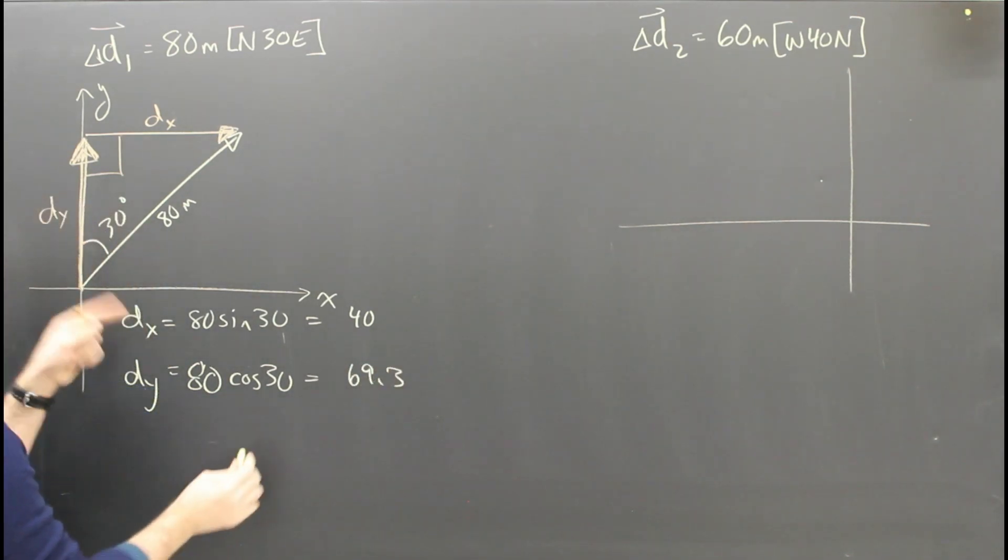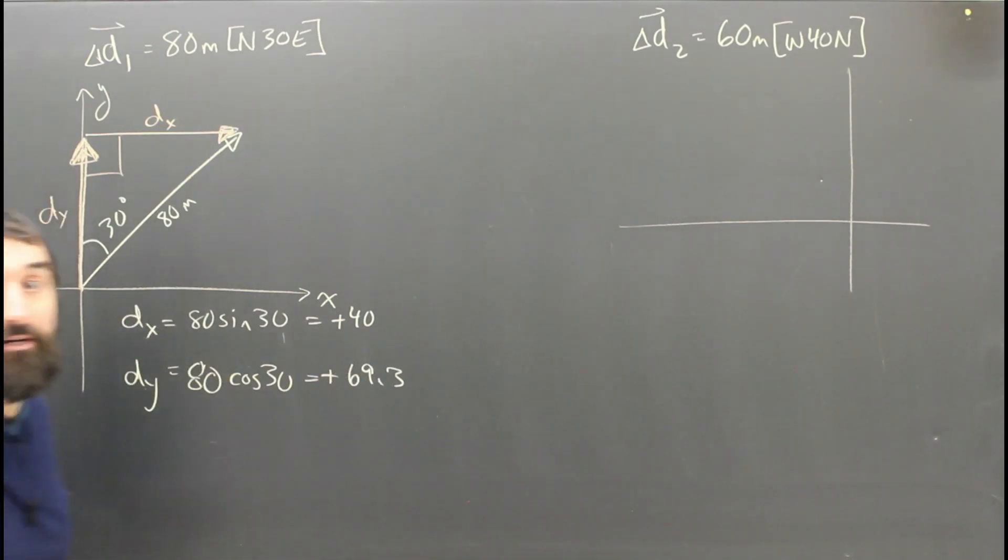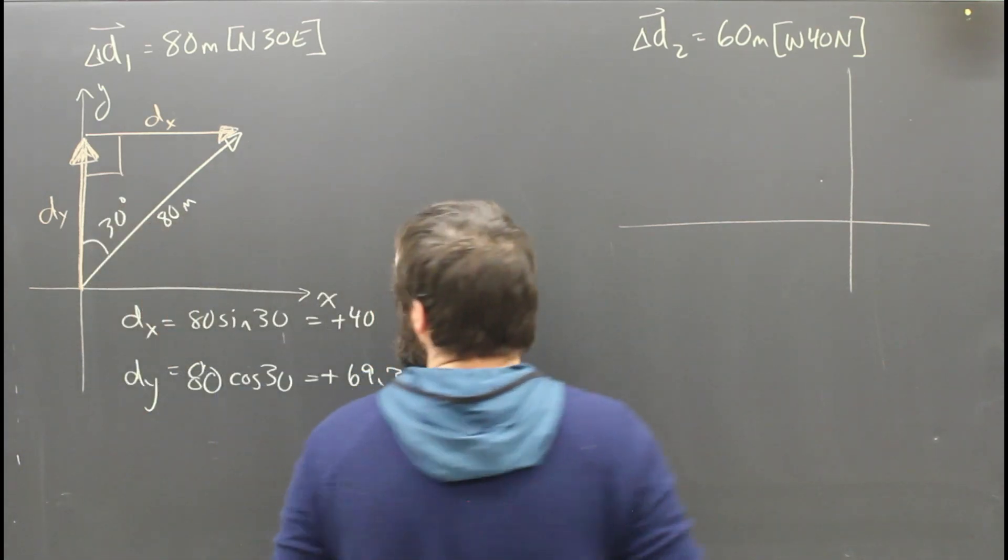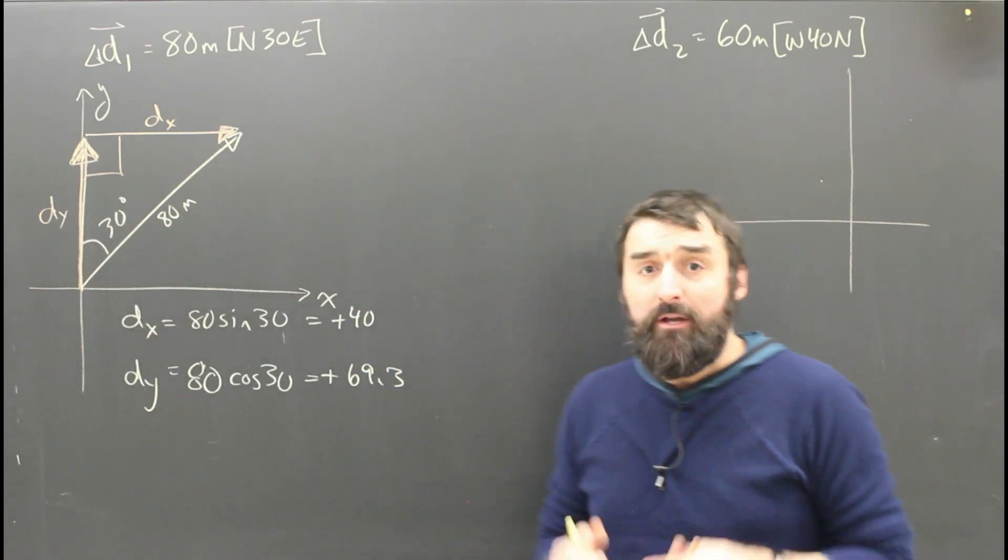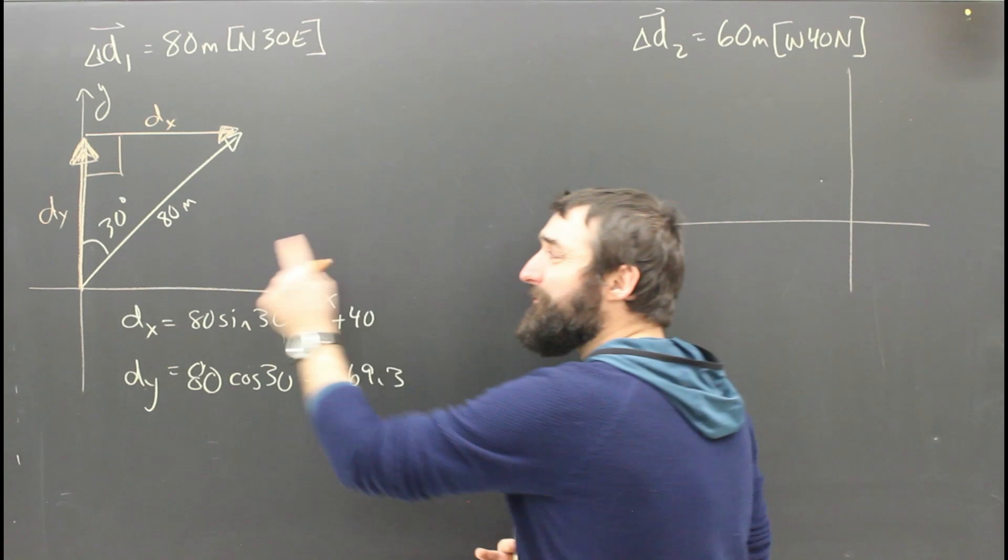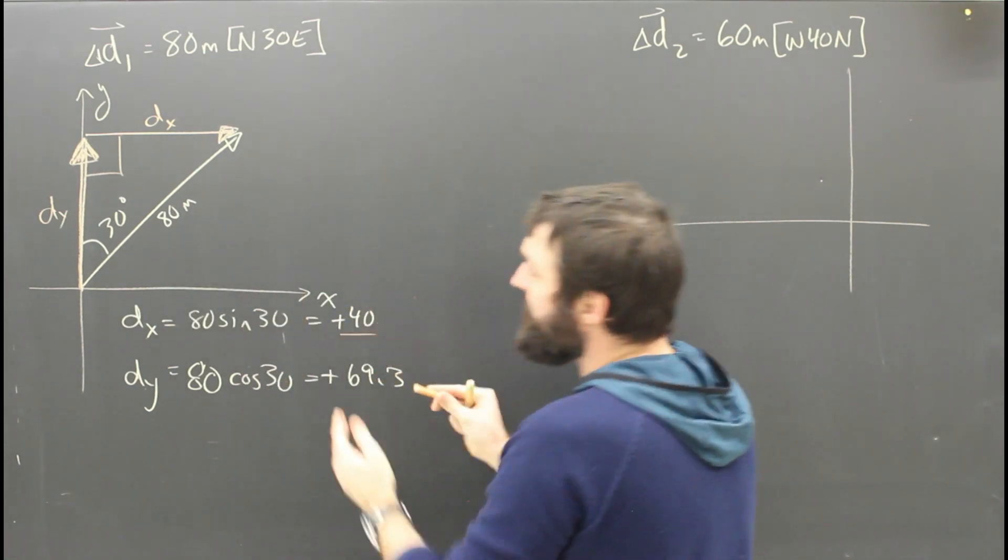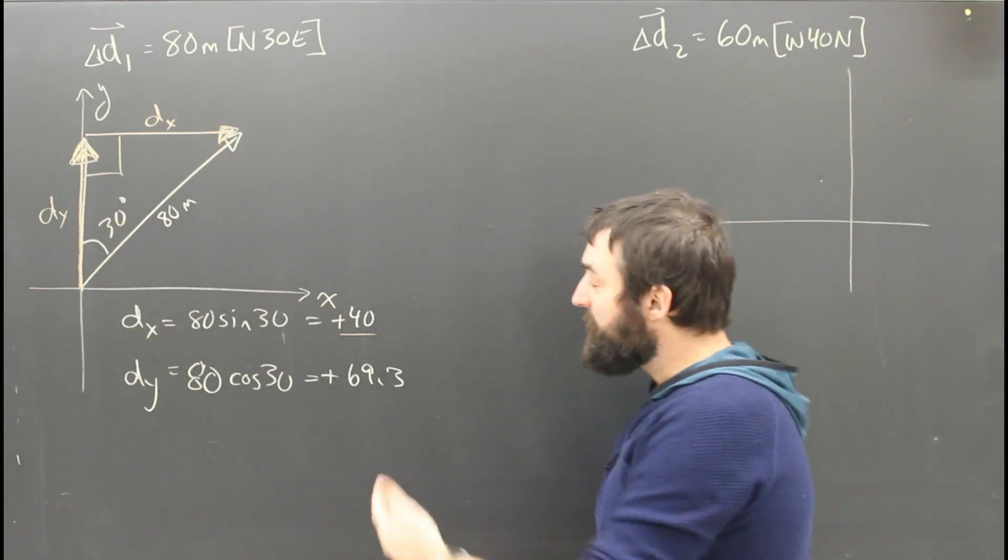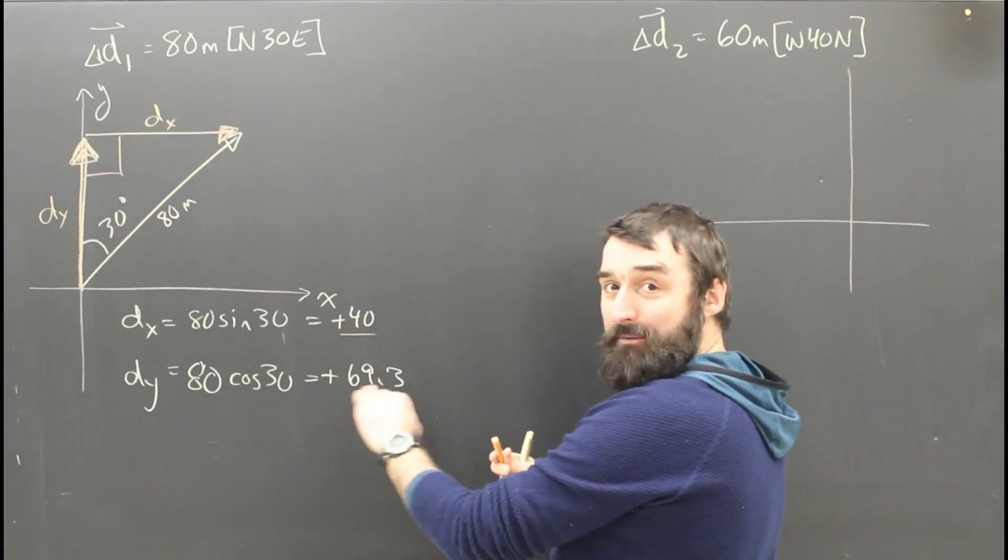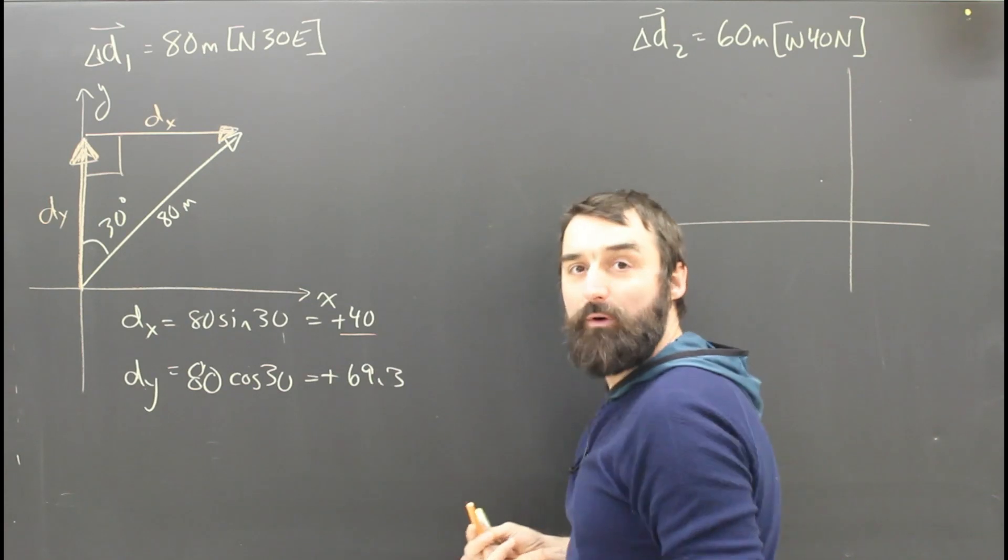But they are both in the positive direction, so I'm going to use my brain and check the sign. That was my last step, if you watched the last video on how to do components. So I hope that makes sense. If you walk 80 meters north 30 east, you will have ended up going 40 meters east of your start point. And you will have ended up going 69.3 meters north of where you started.